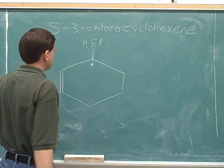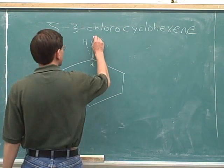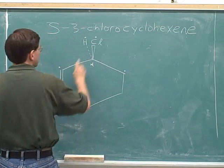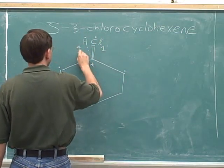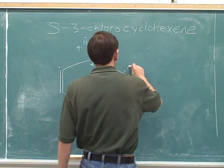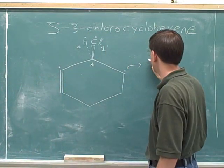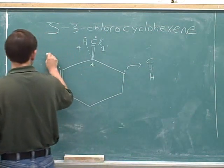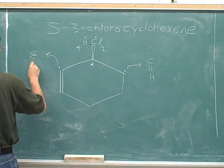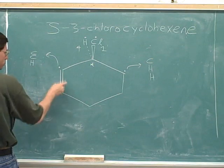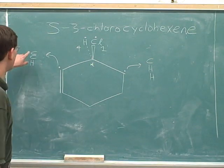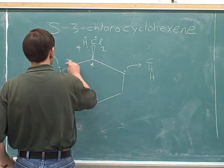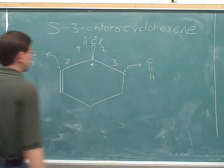Let's figure out what the stereochemistry is here. The chlorine gets the number one priority, hydrogen gets the number four priority. The two carbons are tied, but the carbon on the right is attached to a carbon and two hydrogens, while the carbon on the left is attached to two carbons and one hidden hydrogen. So the list on the left is better, meaning the left-hand group gets the number two priority and the right-hand group gets the number three priority.